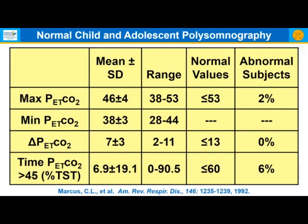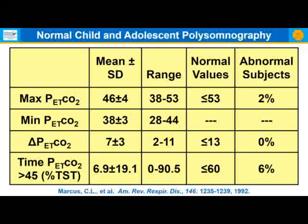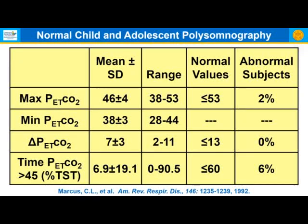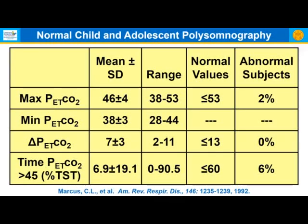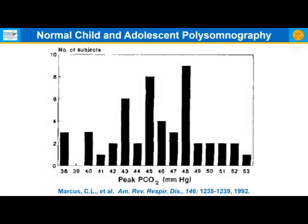Max end-tidal CO2 normal range is less than 53. The minimum was 38, range 28 to 44. Change in end-tidal CO2 was 7 plus or minus 3, so it should be less than 13. The time spent at end-tidal CO2 greater than 45 torr was 7% plus or minus 19%, so the normal value was less than 60% of total sleep time spent at end-tidal CO2 of 45 or greater. Most subjects had peak CO2 in the 40s, but some reached as high as 53.